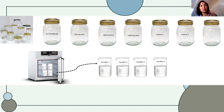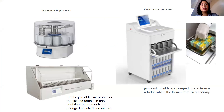Manually, we submerge our cassettes in formaldehyde. After a few hours, we dip it in 70% alcohol, then after an hour 80% alcohol, then 100% alcohol — depending on the practice of that laboratory. That is what happens in manual tissue processing.